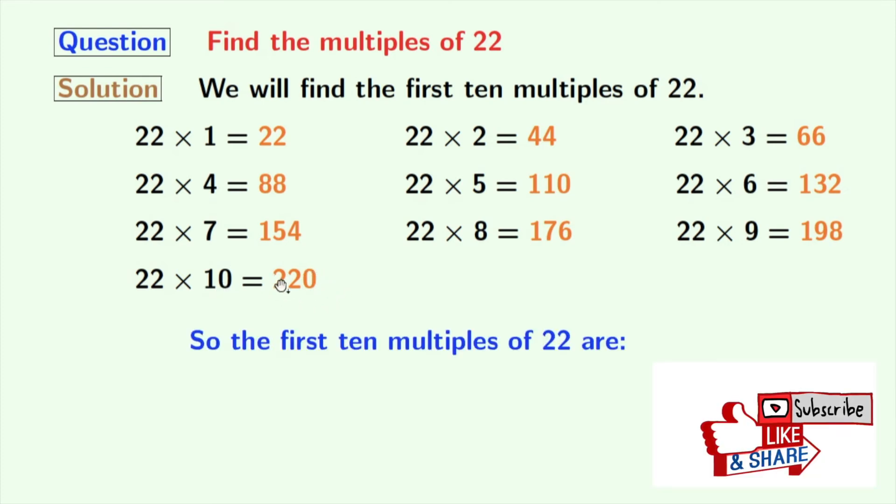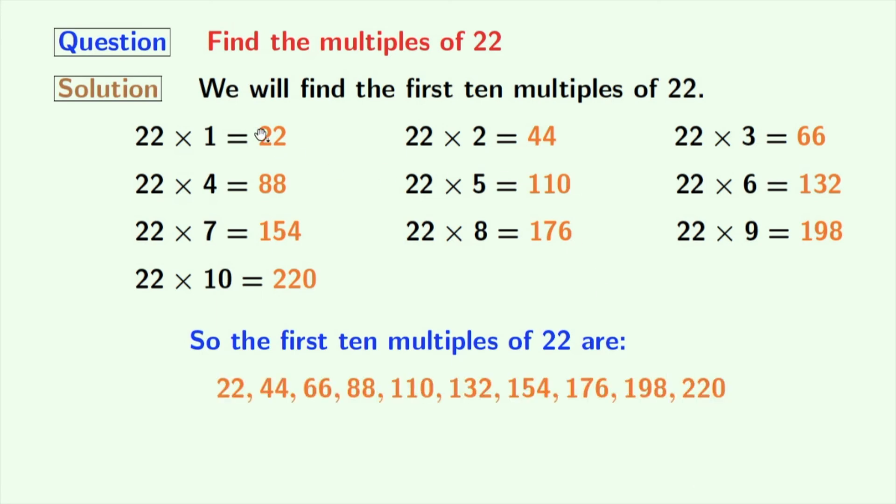So, finally, we have obtained the first 10 multiples of 22 which are the orange ones. These are 22, 44, 66, 88, 110, 132, 154, 176, 198 and 220.